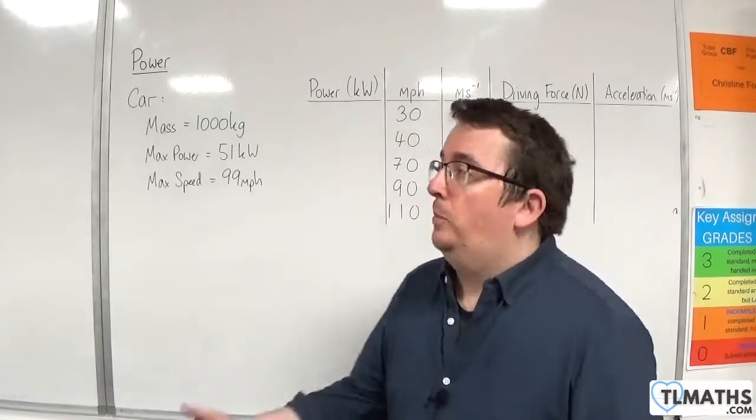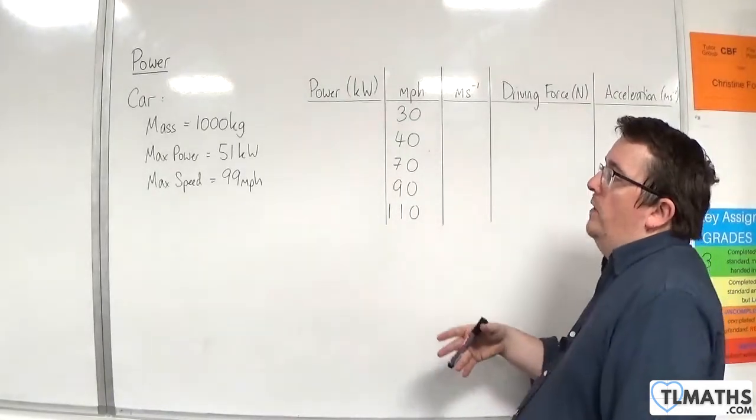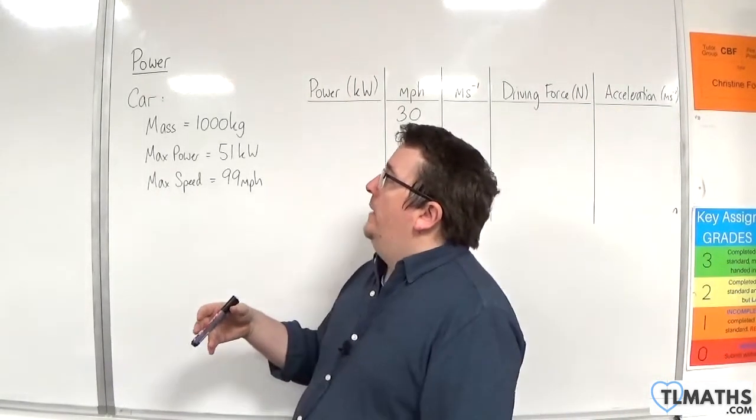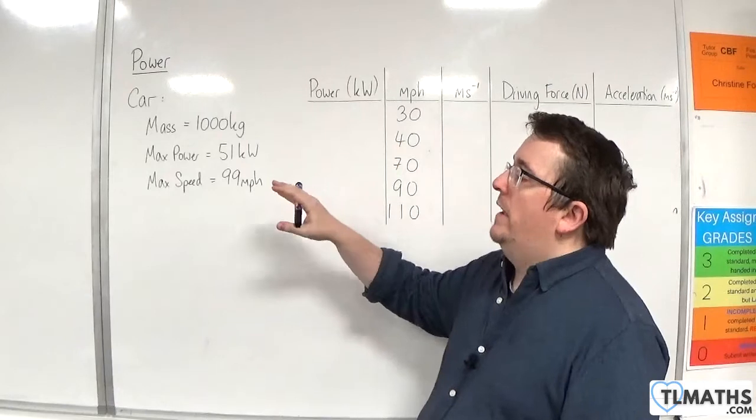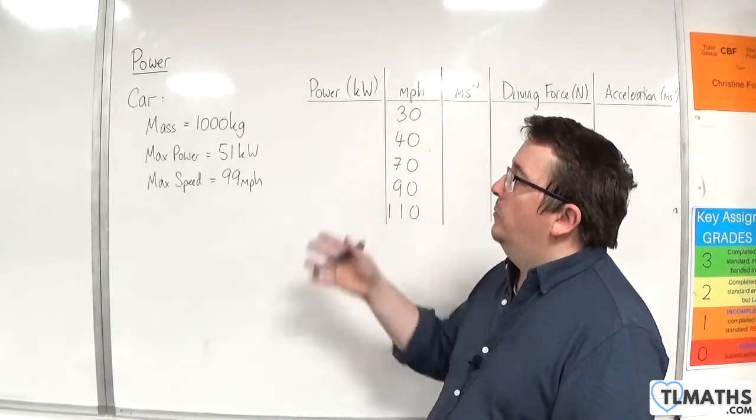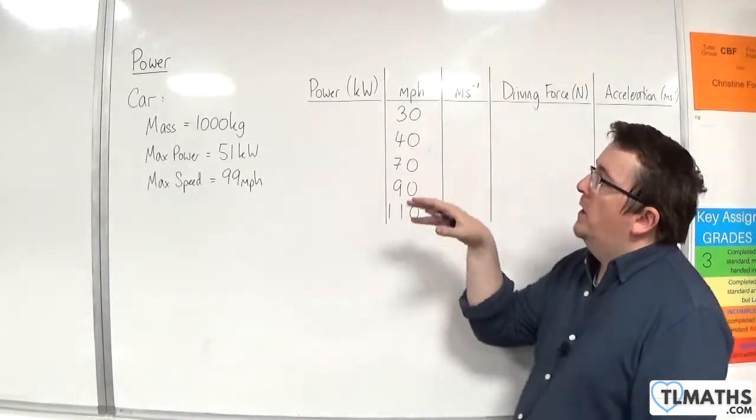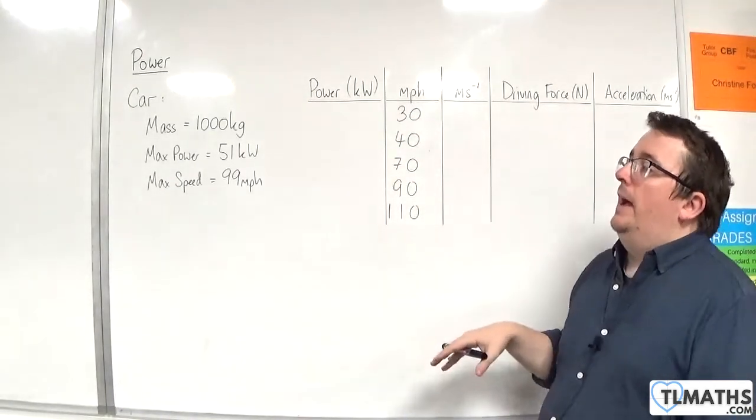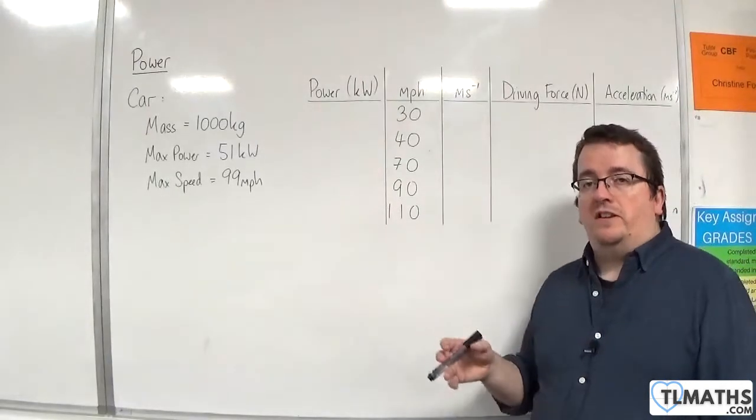In this video, we're going to do a little bit of exploration of what we've found so far. We're going to consider a car that has a mass of 1,000 kilos, a maximum power of 51 kilowatts, and we're going to assume that that's the same throughout. It's got a maximum speed of 99 miles per hour.